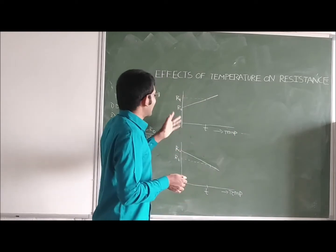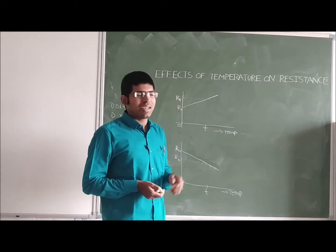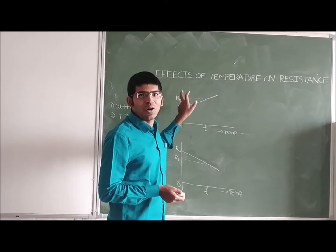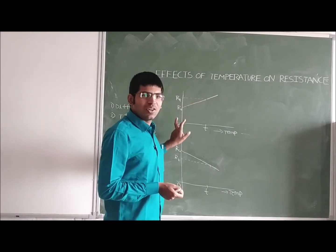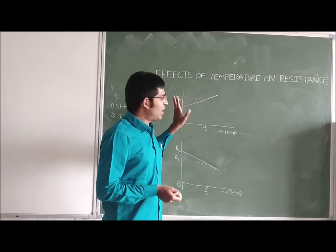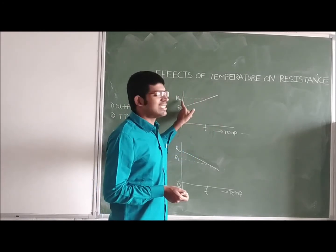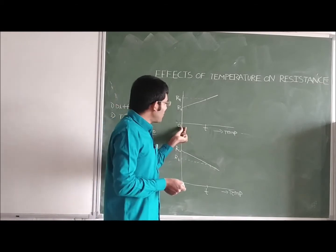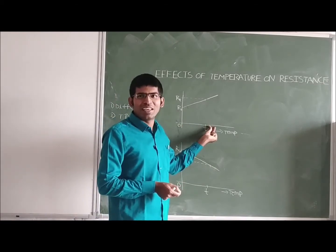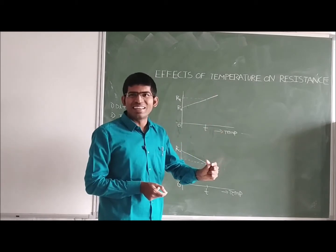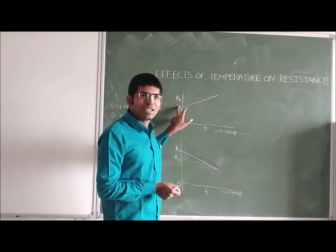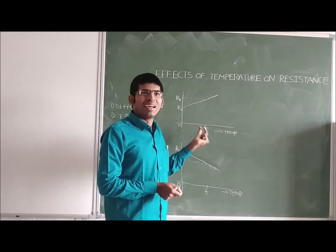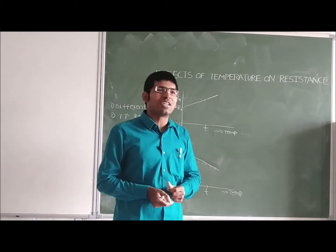For example, when we take conductors or metals, when we raise the temperature from 0 to T, the resistance rises from R naught to RT. The initial resistance at 0 degrees centigrade is R naught, and when we raise the temperature from 0 to T, the resistance rises to RT. This is a linear graph — when we change the temperature from 0 to T, proportionally and linearly, the resistance is also incremented from R naught to RT. So, metals exhibit a positive temperature coefficient.